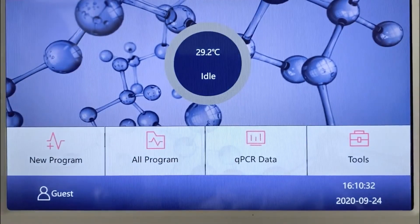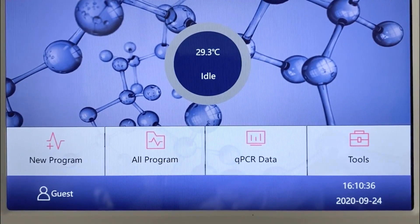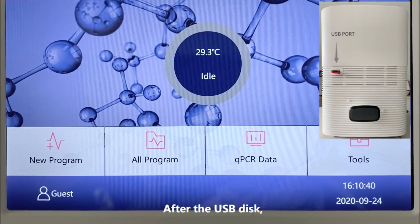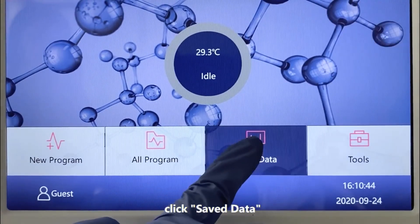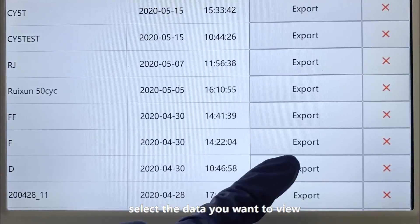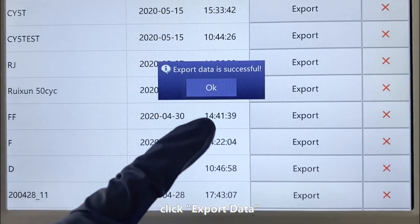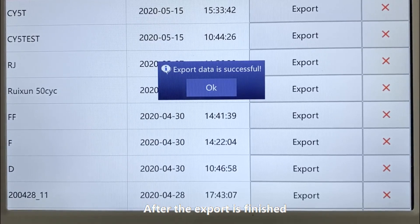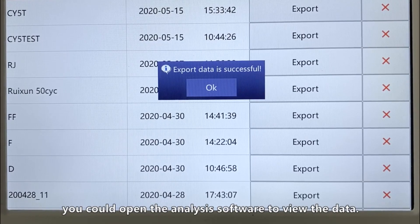After the USB disk is inserted, click Save Data. Select the data you want to view, click Export Data. After the export is finished, you could open the analysis software to view the data.